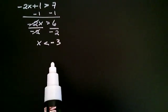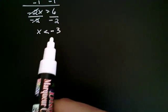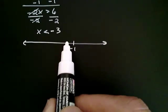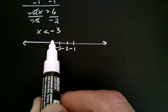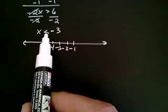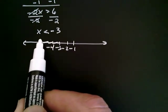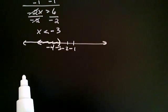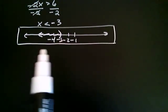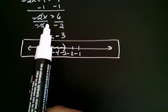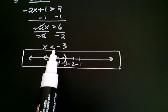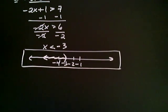When we graph this, we want numbers that are less than negative three, meaning to the left of negative three on the number line. So we shade to the left of negative three. The important point is that the direction of the inequality changed: before it was greater than, and it became less than when we divided both sides by a negative.